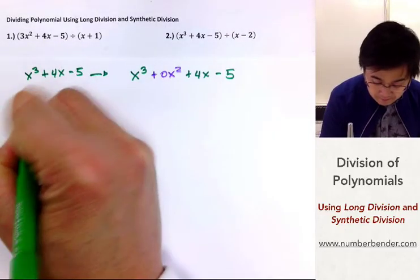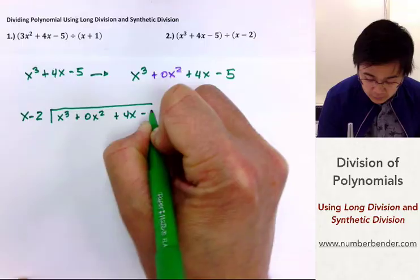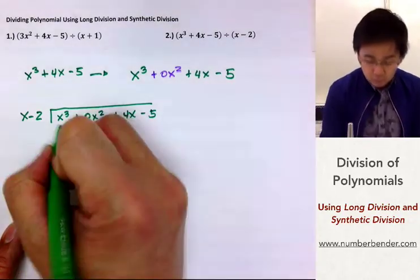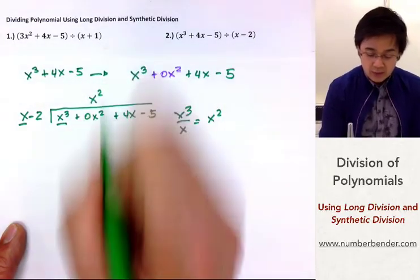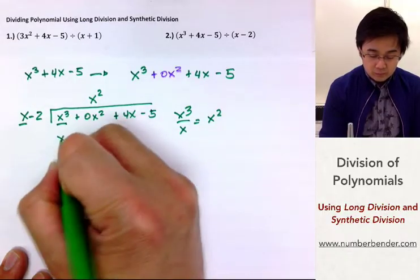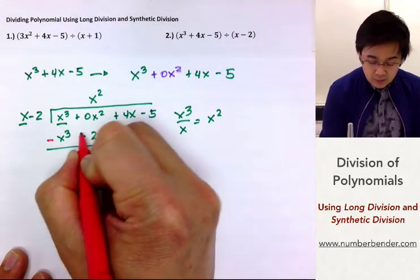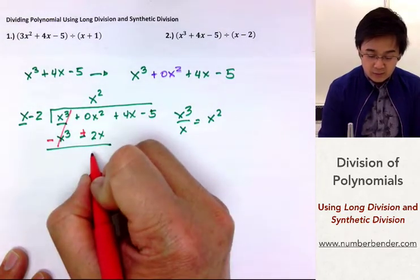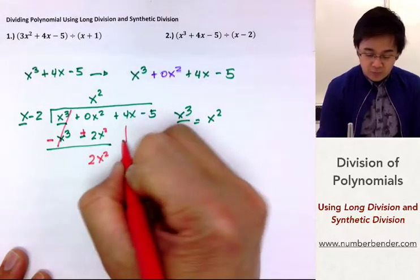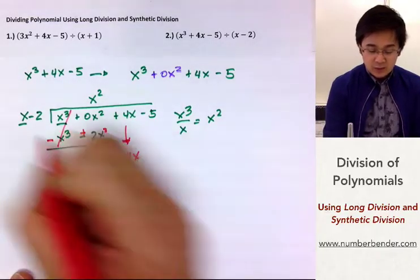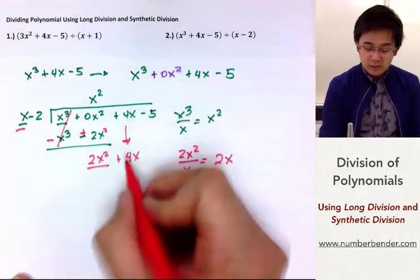We're going to divide x cubed plus 0x squared plus 4x minus 5 by x minus 2 using long division. Just like the first example, we divide x cubed by x to get x squared, line it up with the squared term, and multiply it back to x minus 2, giving us x cubed minus 2x squared. We then change the sign to subtract — this cancels out x cubed, and 0x squared plus 2x squared gives us 2x squared. Then we bring down positive 4x.